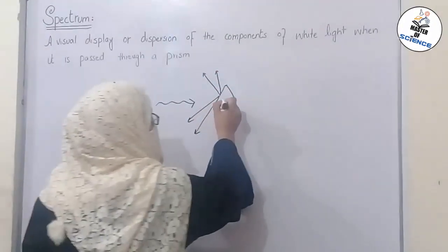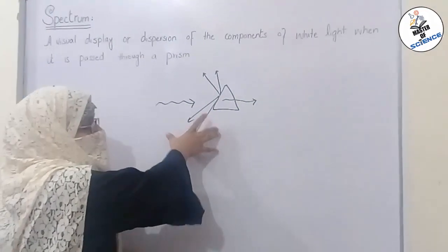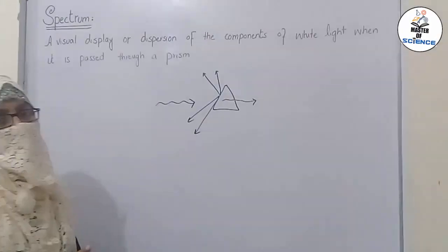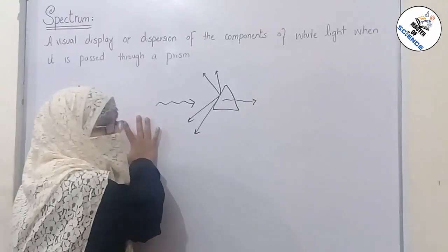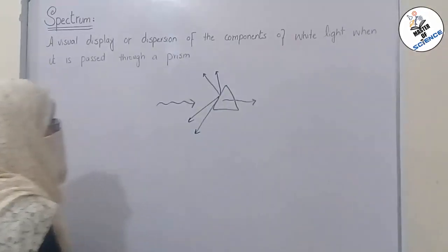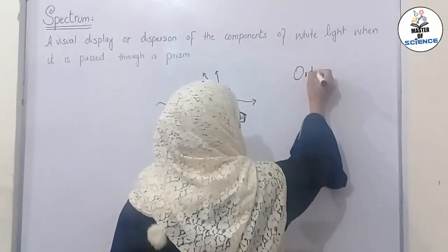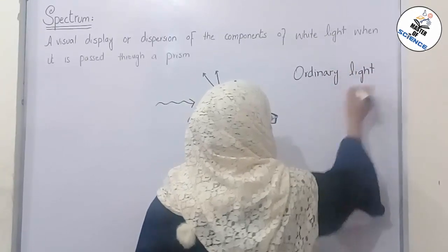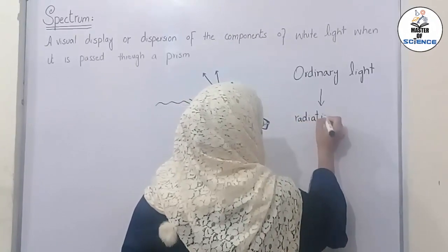Certain light passes through the prism while other light is bent. This bending depends on the radiation. Radiations of longer wavelength bend to a smaller degree than radiations of shorter wavelength. Ordinary light consists of radiations of all wavelengths.